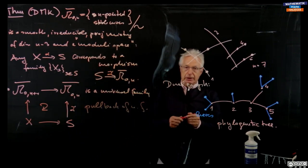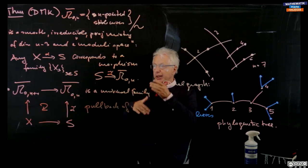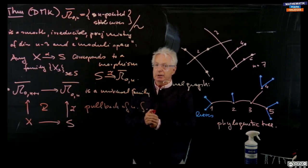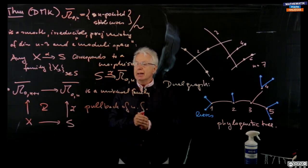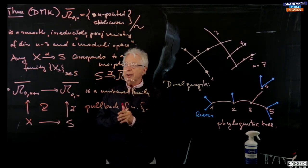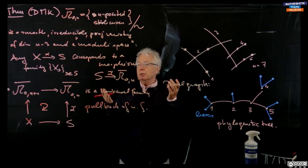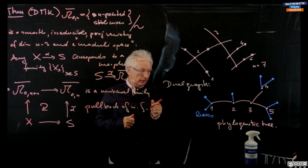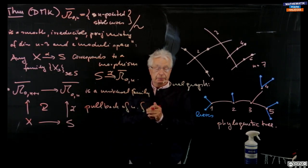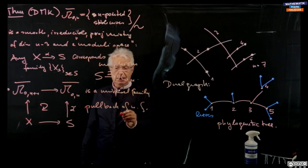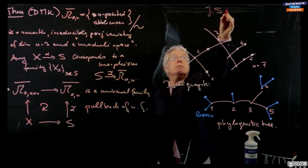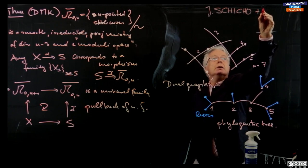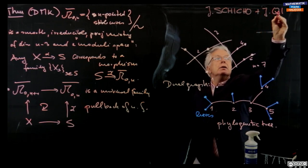There are various proofs of these results. Deligne, Mumford and Knudsen is not easy to read — you need quite a bit of machinery from algebraic geometry. What I want to propose today in the second half of this lecture is to give an approach which is kind of down to earth, relatively elementary, and moreover, quite exciting and beautiful. This second part is a cooperation with Josef Schicho and Yayue Gi.